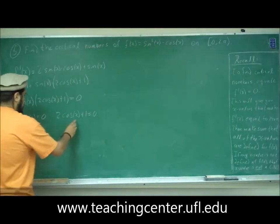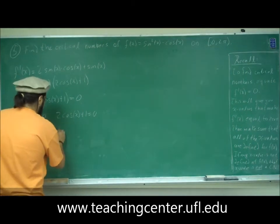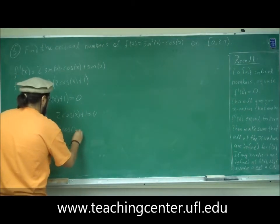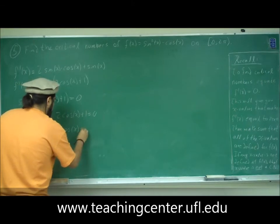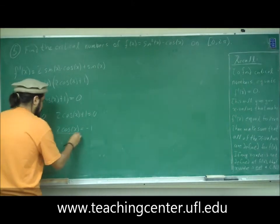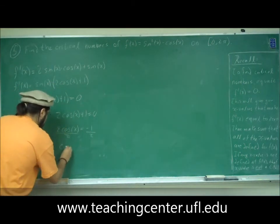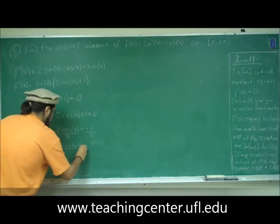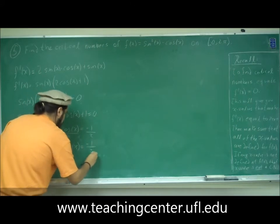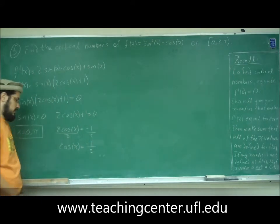Okay, so here, let's go ahead and solve this. We get two cosine of x, move the one to the other side, negative one, divide both sides by two. Two's cancel, cosine of x equals negative one-half. So when does cosine of x equal negative one-half?